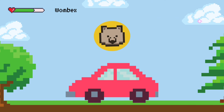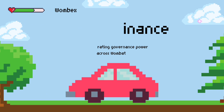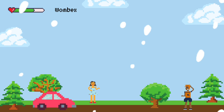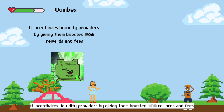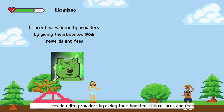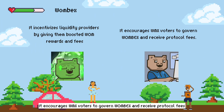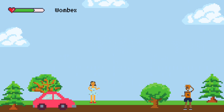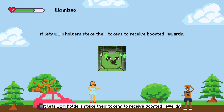Wombex focuses on boosting yield for liquidity providers and concentrating governance power across Wombat. It incentivizes liquidity providers by giving them boosted WOM rewards and fees. It encourages WMX voters to govern Wombex and receive protocol fees. It also helps Wombex holders stake their tokens to receive boosted rewards.